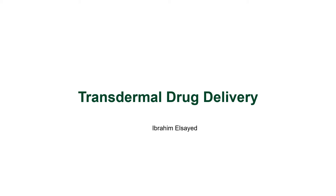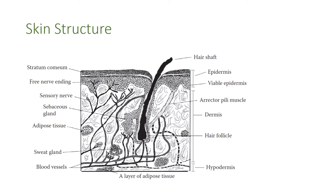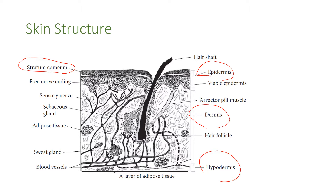Hello everyone. Our chapter today is about transdermal drug delivery system. As you know, the skin is formed of three main layers. The first layer is called epidermis, the second is dermis, and the third layer is called hypodermis. The most difficult layer for drug permeation through the skin is the stratum corneum, which is a dead cell layer covering the epidermis. If the drug can pass through the stratum corneum, it will move easily through the viable epidermis, dermis, and hypodermis.